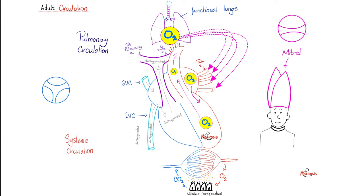Each cell takes in oxygen and nutrients from the arterial side and dishes out carbon dioxide and waste into the venous side. The venous side goes to the inferior vena cava and superior vena cava, then to the right atrium and right ventricle.